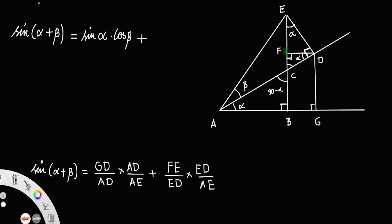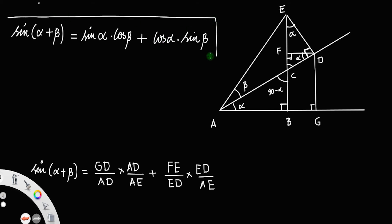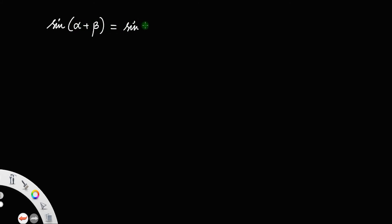Cos beta, plus — what about FE by ED? Let us consider triangle EFD: FE by ED is cos alpha. So cos alpha into — the last ratio, ED by AE: if you again consider this triangle, ED by AE is sin beta. So you have the relation: sin of alpha plus beta equals sin alpha cos beta plus cos alpha sin beta.